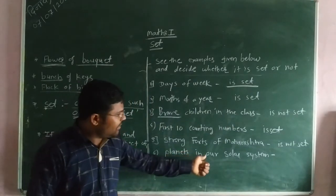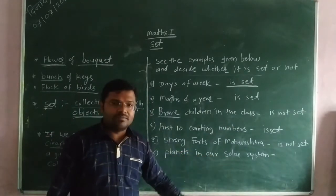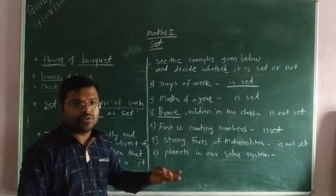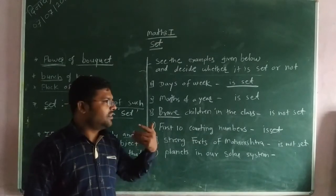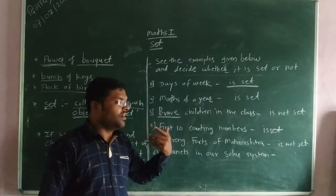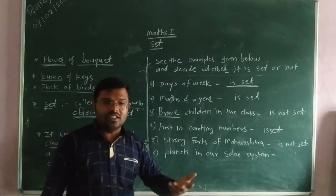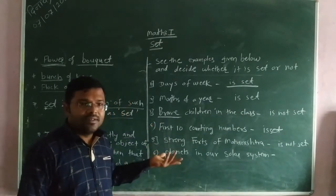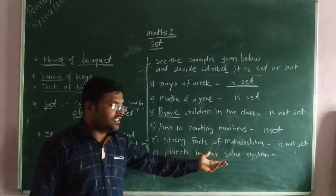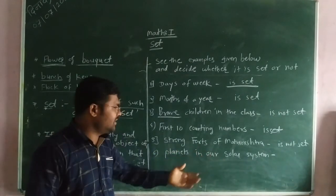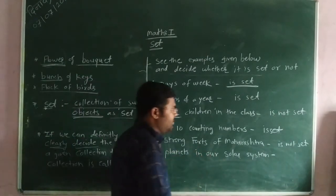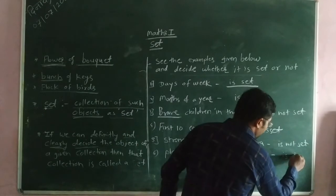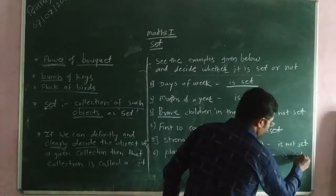Planets in our solar system — the planets are Mercury, Jupiter, Saturn, Earth, Uranus, Neptune. These are the planets of our solar system. So this is not changeable. So we can say this is a set.